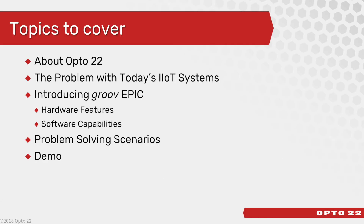We have a lot to cover in the next 45 minutes. We'll start by telling you a little bit about Opto, followed by the problems we see in industrial IoT systems today. Then I'm excited to introduce you to our newest groundbreaking product, GrooveEpic, including its hardware features and software capabilities. Then I'll describe various scenarios where we can solve common nagging communication problems, and finish with a live demo. You are viewing a recorded version of this webinar. You may also request a copy of these slides in PDF format by contacting us at sales@opto22.com.